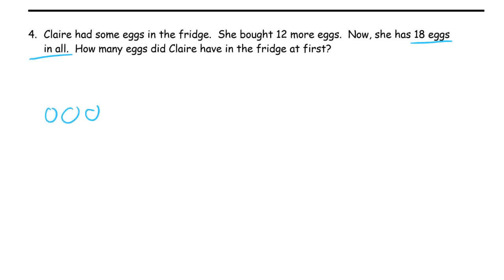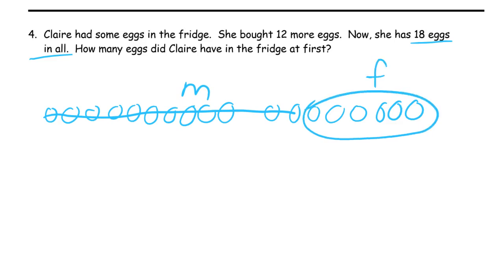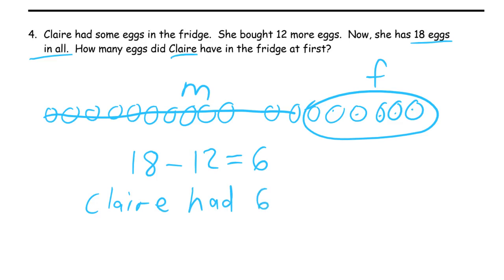So we can draw all 18 eggs — one through eighteen. She bought 12 more, right? So we get to cross out 12: ten, eleven, twelve. Those are the more that she bought. And these are the ones she had at first, labeled F. So we know we started with the 18 in all and crossed out the 12 more that she bought. And we found out that there were one, two, three, four, five, six left. Claire had six eggs at first.